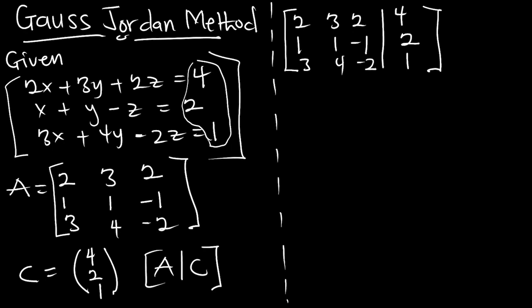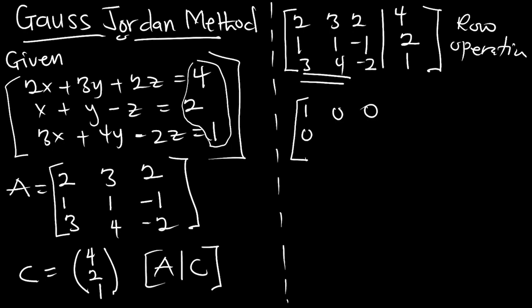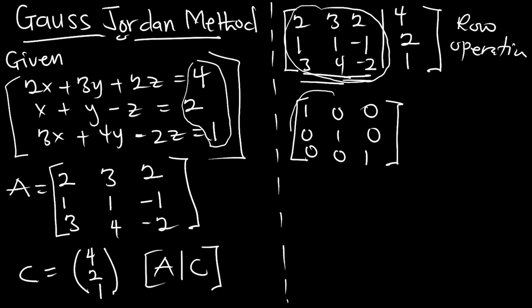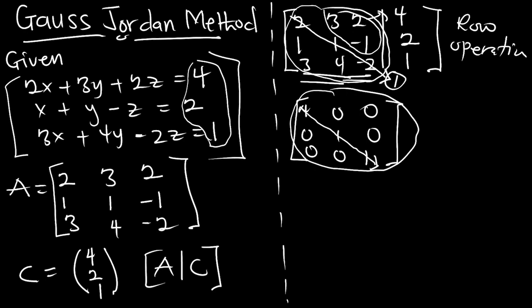For the Gauss-Jordan method, we are going to apply row operations, but here we are going to convert the A part to the identity matrix — the 3×3 identity matrix, because this part is a 3×3 matrix. The identity matrix is: 1, 0, 0; 0, 1, 0; 0, 0, 1. We are going to do row operations on this matrix and convert the A part to this form. Everything except the principal diagonal should go to 0, and everything on the principal diagonal should go to 1.